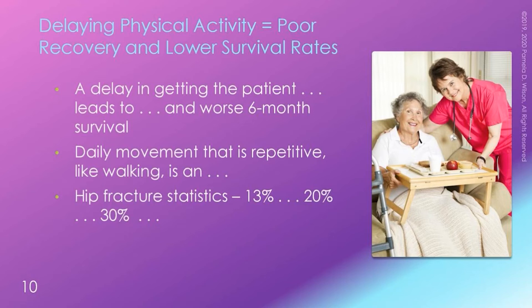Let's talk about some general statistics about the after effects of people who fracture hips. 13% of people living in the community die within one year. 20% living in assisted living die within one year. 30% of people with dementia or those who live in nursing homes die within one year. Don't let yourself or an elderly parent who is inactive or physically weak become one of these statistics.